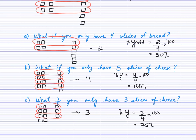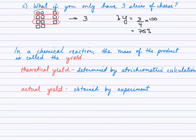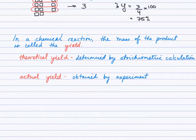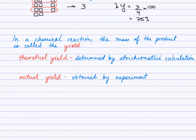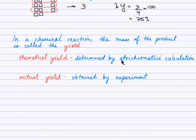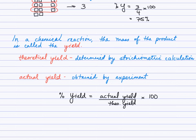The concept of percent yield is really just about comparing the actual yield to what we call the theoretical yield. Instead of counting slices of cheese or bread, when we do chemistry questions we're going to be looking at the mass of the product. The theoretical yield is the mass of the product determined by stoichiometric calculation — remember your mass to moles to moles to mass. The actual yield is the mass obtained by experiment. We relate those two just as in the sandwich analogy: actual yield over theoretical yield, multiplied by 100 to express it as a percent.